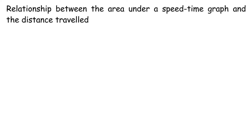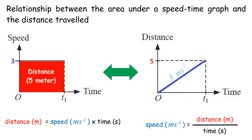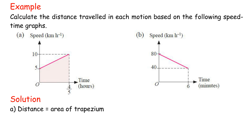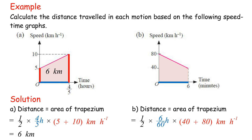Relationship between the area under a speed-time graph and the distance traveled: the area under a speed-time graph is the same as the distance traveled for the same time interval. Example — calculate the distance traveled: A. Distance equals area of trapezium equals half times 4/5 hour times (5 plus 10) km per hour. B. Distance equals area of trapezium equals half times 6/60 hour times (40 plus 80) km per hour, equals 6 km.